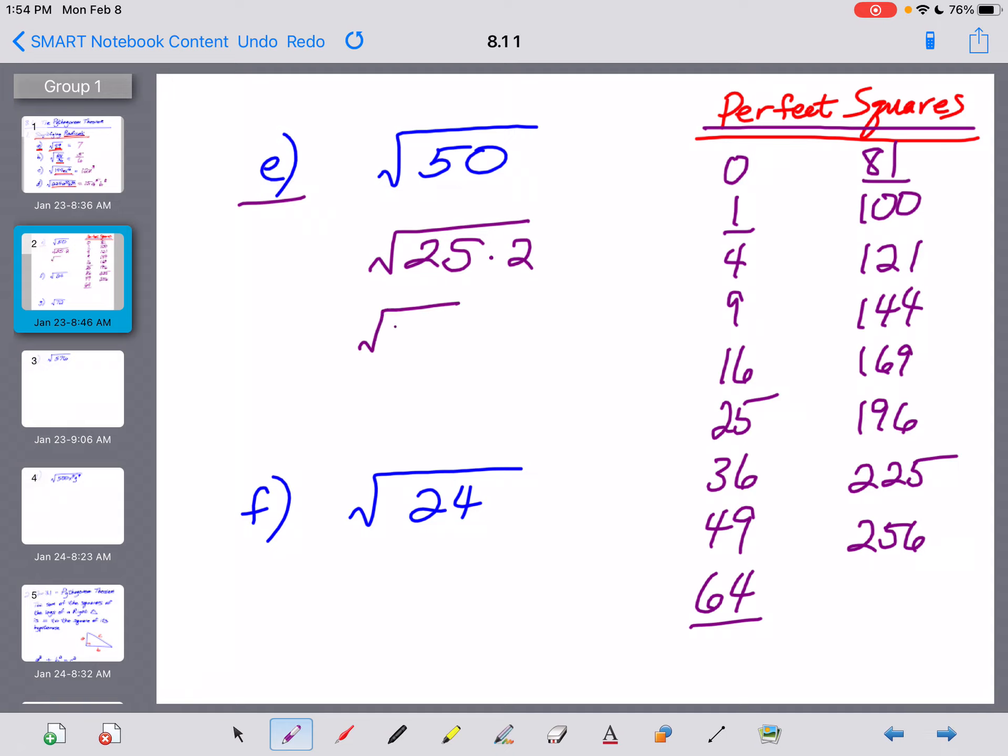And now you would use a property of radicals that says you can break this up into the square root of 25 times the square root of 2. And the square root of 25 is 5. You can't do anything with the square root of 2. So that's your answer. The square root of 50, put in simple radical form, is 5 times the square root of 2.